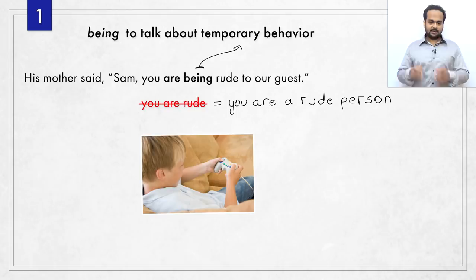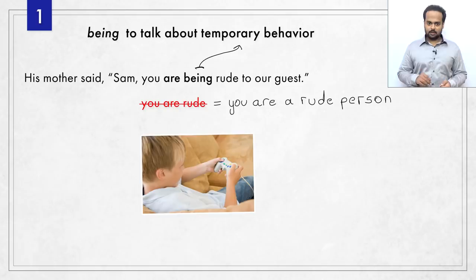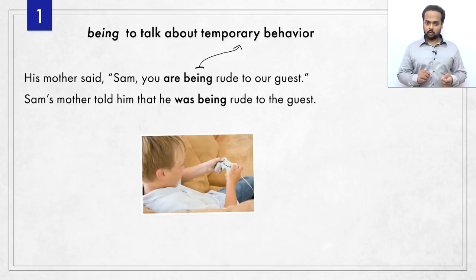So the kid put away his video game controller, came and said hi, how are you, and we had a nice little chat. Now we see the present continuous tense here because this is exactly what Sam's mother said in her own words. But if you want to report it indirectly, you can use the past continuous tense: Sam's mother told him that he was being rude to the guest. So 'you are being' changes to 'he was being.'